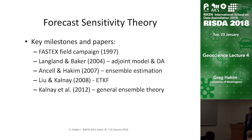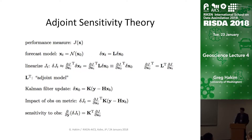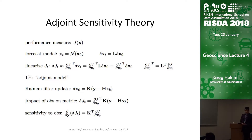Eugenia was on the same track around the same time and has, through a sequence of papers, generalized that very nicely. This is my summary — a distillation of the forecast sensitivity and adjoint sensitivity theory as you might find it in the Langland and Baker papers or in other adjoint sensitivity papers.